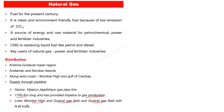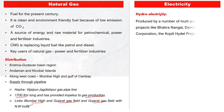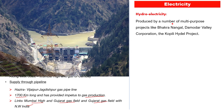Regarding electricity: there are two types — mainly hydroelectricity from multi-purpose projects such as the Bhakra-Nangal project, Damodar Valley Corporation, and Kopili Hydel project, involving different dams.